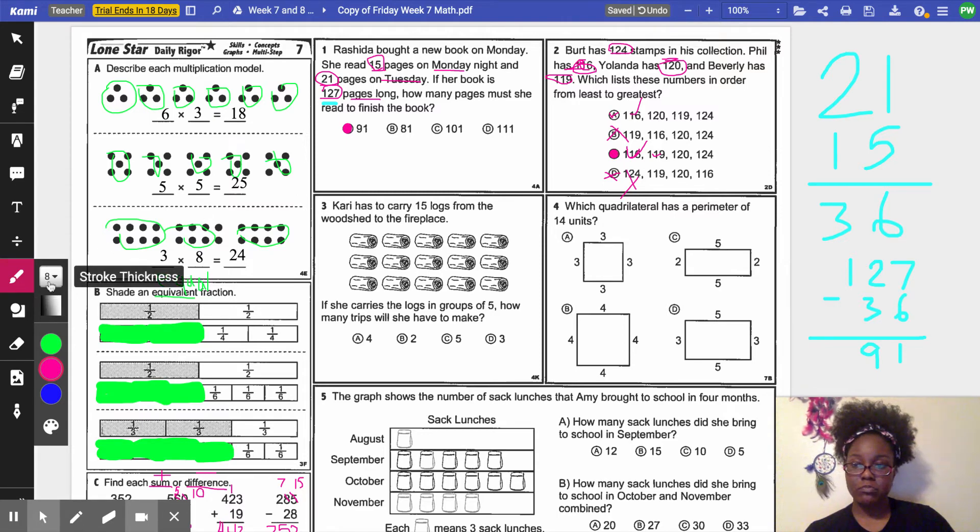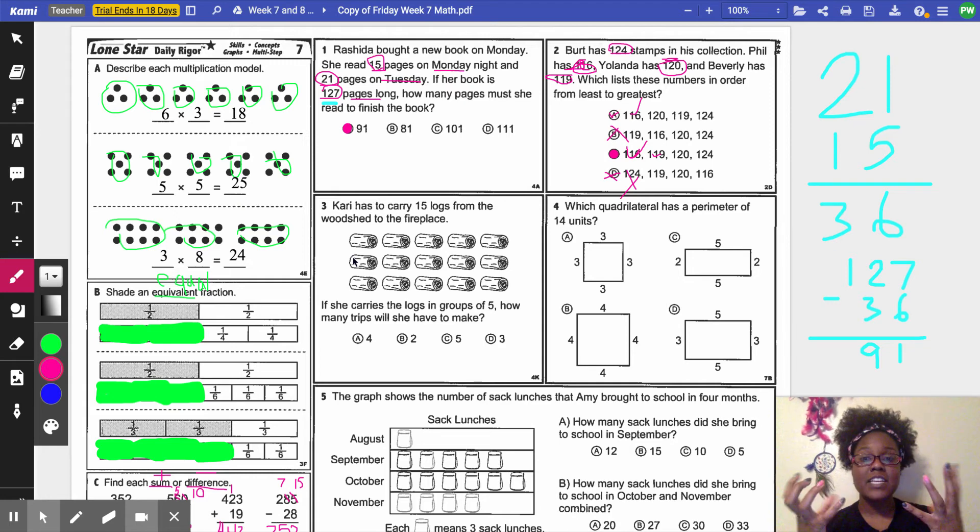And moving on to number three. Number three says, Carrie has to carry, that's funny, 15 logs from the woodshed to the fireplace. If she carries the logs in groups of five, how many trips will she have to make? So if she's carrying them in groups of five, I personally go ahead and solve it without the picture, because sometimes the pictures can be wrong. Sometimes they won't put enough logs. In this case, they do have enough. But I'm going to go ahead and count it out on my fingers. So if I have a problem where it has five in it and I know that I'm going to do... So we haven't talked about the operation yet. Hold on. She has 15 logs total, and she wants to carry them in groups of five. I know that I'm going to do division because I know the total. She has 15 total logs.